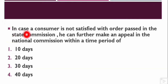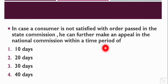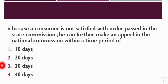Next question: In case a consumer is not satisfied with the order passed in the state commission, he can further make an appeal in the national commission within a time period of. Option 1: 10 days. Option 2: 20 days. Option 3: 30 days. Option 4: 40 days.